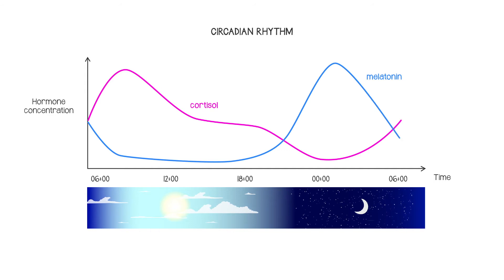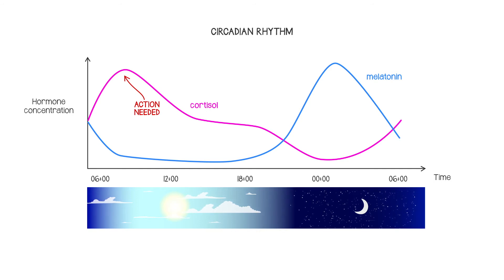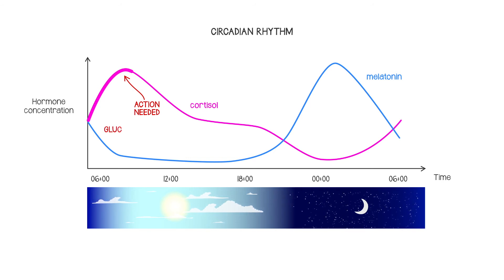The exact pattern depends on what the hormone is being used for. The body anticipates what would be needed at a certain time of day, and releases hormones in advance to get you ready for that. For example, you might want your blood sugar levels to rise just before you get up in the morning so you're ready for action.